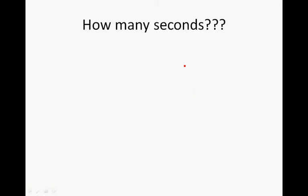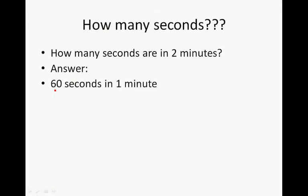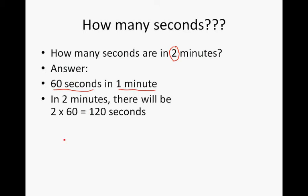How many seconds are in two minutes? In one minute there are 60 seconds. So for two minutes, we do two times 60, which gives us 120 seconds in two minutes.